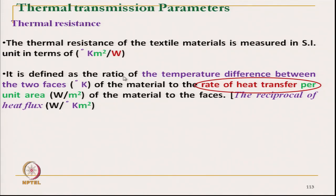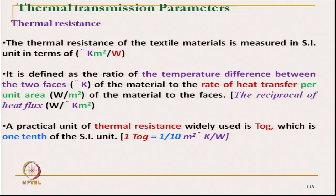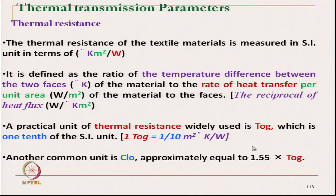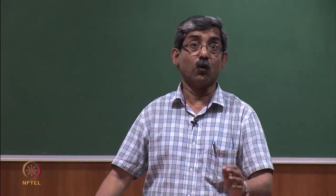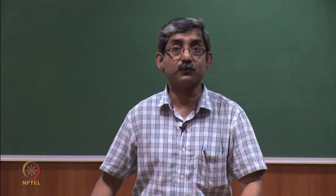The thermal resistance measurement can be made using different instruments like the tog meter or the sweating guarded hot plate. A practical unit used for thermal resistance measurement is called the tog, which is one-tenth of the SI unit — that is, one tog equals one-tenth of meter squared degree Kelvin per watt. Another practical unit used for expressing thermal resistance of clothing is called clo, which comes from the word 'clothing'.